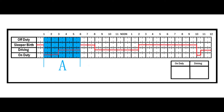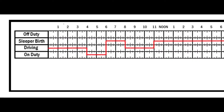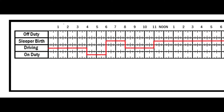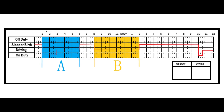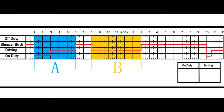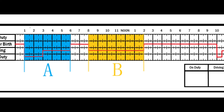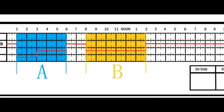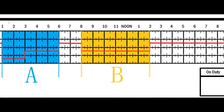Now let's say you're into your next work period — you did your driving, some on-duty time, your sleeper berth time (either two or three hours in the sleeper berth or off-duty), then more driving, and you're going back into the sleeper berth and want to split again. What you would do to figure out how many hours you have after this split is go to Section B and do the same thing: subtract the hours you used in Section B from the 14-hour rule or 11-hour rule.